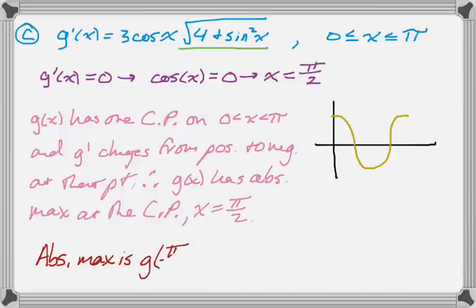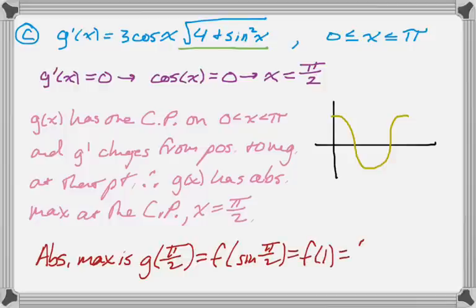So we need to write an integral expression for the value of the function there. So it will be g of pi over 2, which is f of sine of pi over 2. And I know that sine of pi over 2 is 1. And once I know that, I can just plug into the original function I was given. So the integral from 0 to 3 of the square root of 4 plus t squared dt. And that's the entire question.